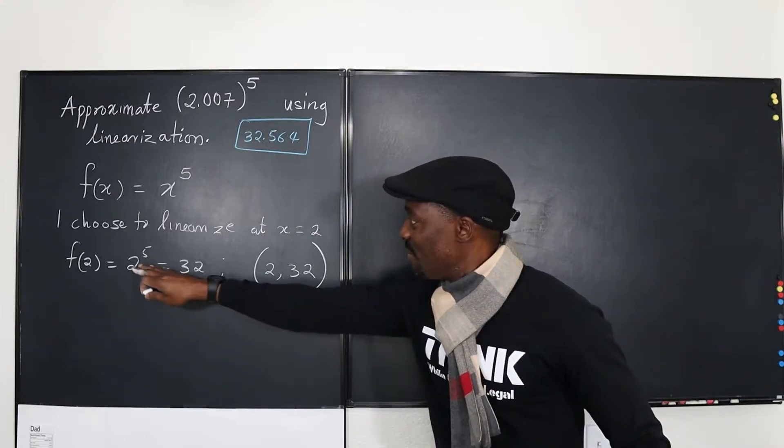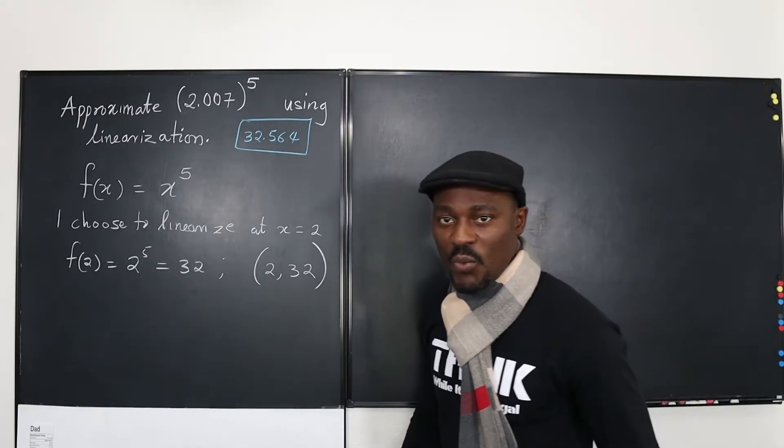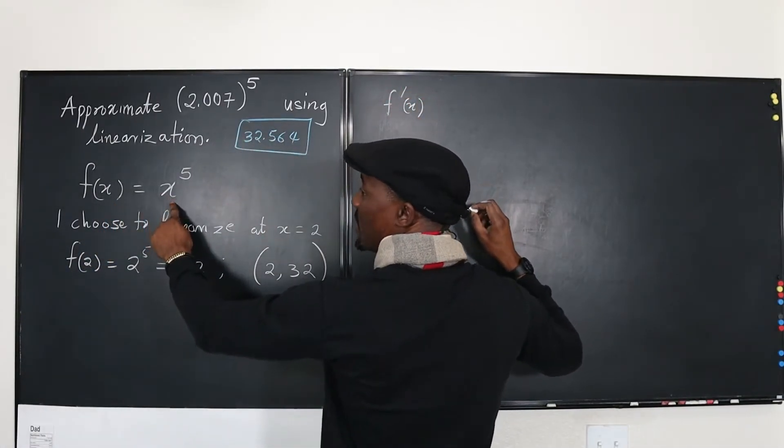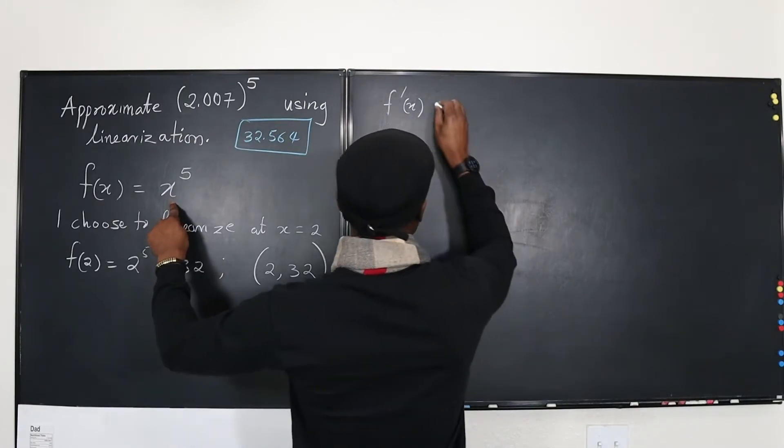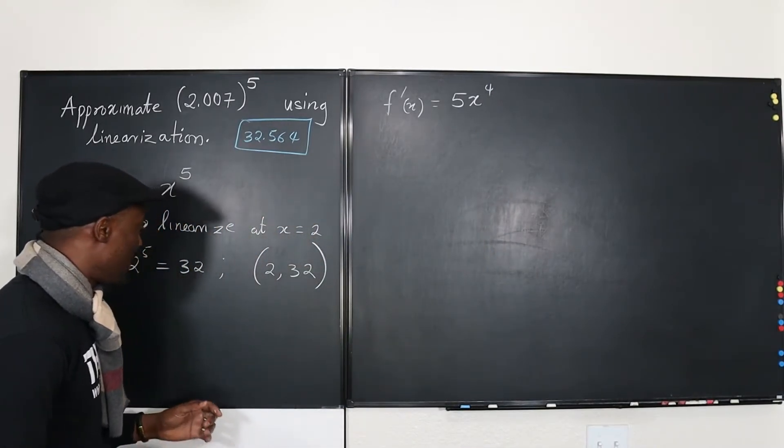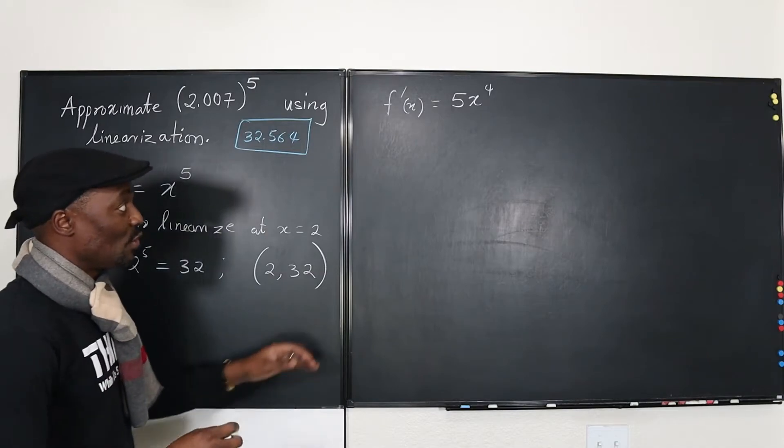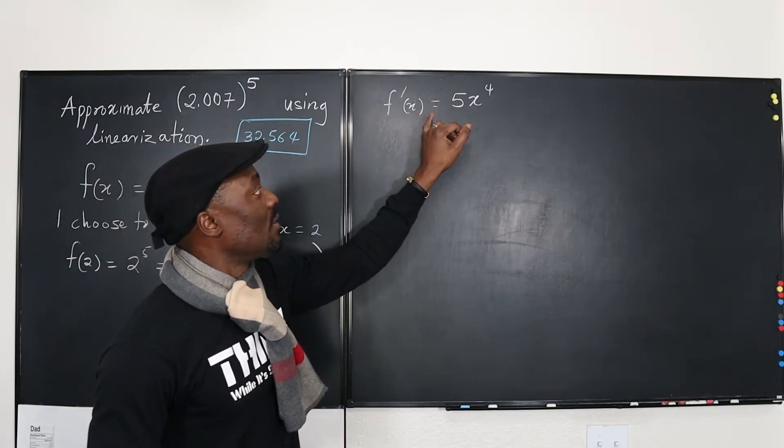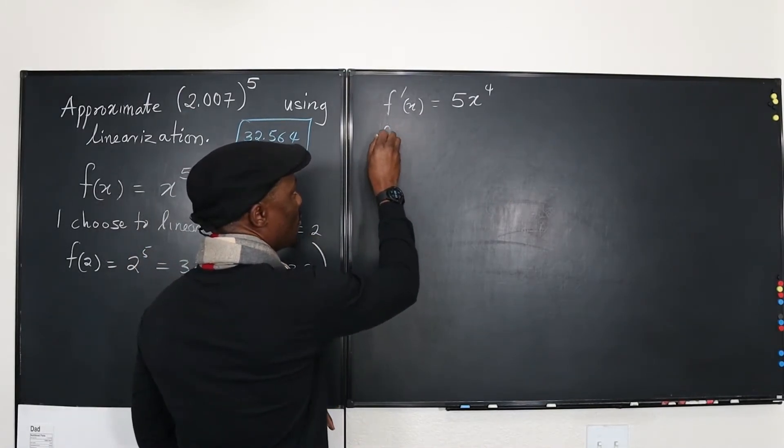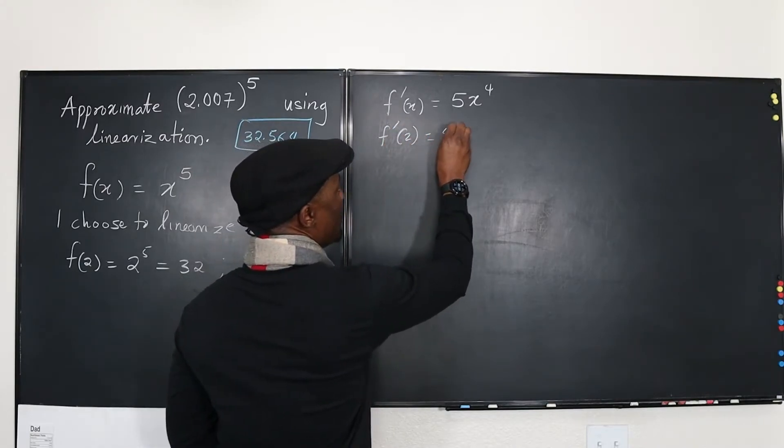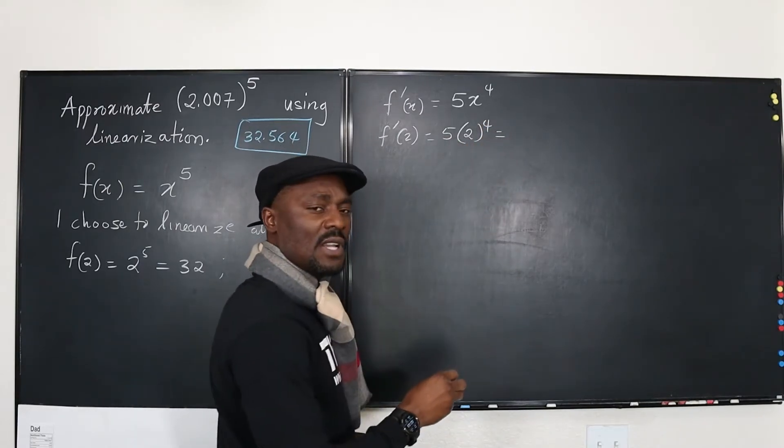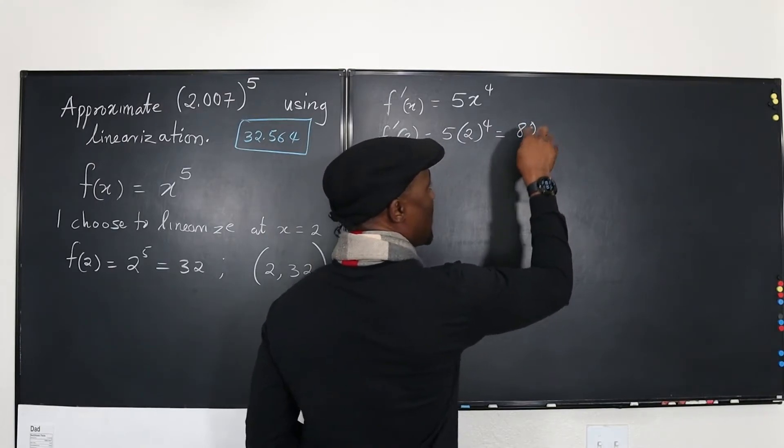So now that we have this point chosen, we can just take the derivative. What will be the derivative of this function? We have f prime of x. Remember, this is the function is the quintic function, which is now going to be equal to 5x to the fourth. Now we need to know what the slope of the graph is at that point. So we evaluate this, let's just find the slope at the point x equals 2, because that's our point of linearization. So this evaluated at 2 is going to be 5 times 2 to the fourth, which is going to be 5 times 16. What's 5 times 16? That's 80. So this is our slope.